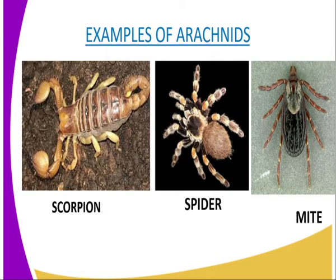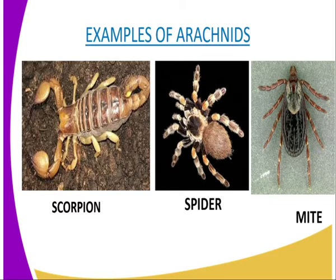Our second characteristic is that the cephalothorax consists of a fused head and thorax. The third characteristic is that the ventral side of the cephalothorax has two chelicerae, each having a claw-like structure which produces poison and paralyzes the prey.